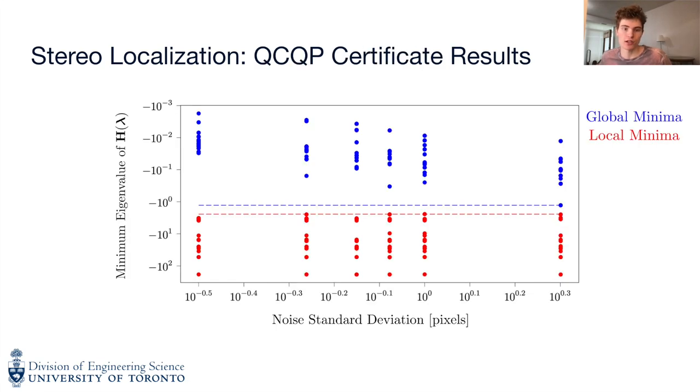The preceding results indicate that the dual problem is not tight and the certificate matrix will not be positive semi-definite at global minima. To verify this, we generate problems with varying pixel space noise and plot the minimum eigenvalue of the certificate matrix. For globally optimal solutions, this value should be near zero. In the plot, blue dots are the global optima, red dots are the local minima. Although a gap exists between the minimum eigenvalues, it narrows with noise and the matrix isn't positive semi-definite within a reasonable tolerance.